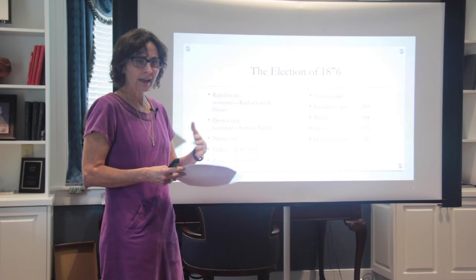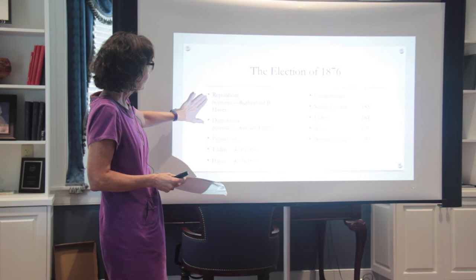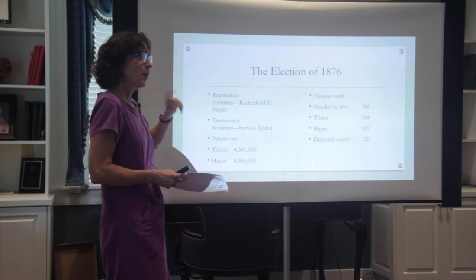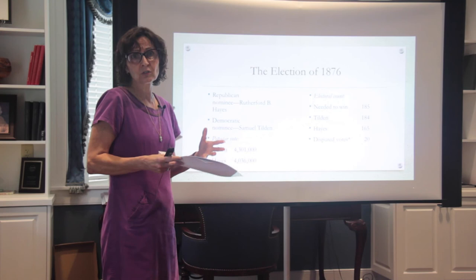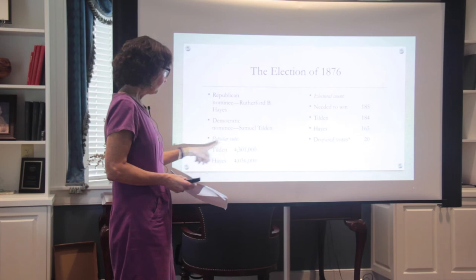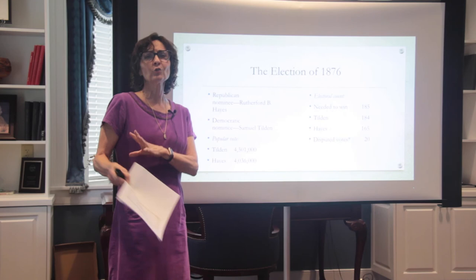By this time, all but three southern states have been redeemed, essentially under Democratic control. Tilden wins the popular vote. The electoral vote is obviously what's important. In 1876, you needed 185 votes to win. They tally everything up and Tilden is one shy. Hayes has 165, but there are 20 disputed votes. Tilden needs one; Hayes would need every single one of those 20 to win. But you've never heard of President Tilden, so you also know what happens.